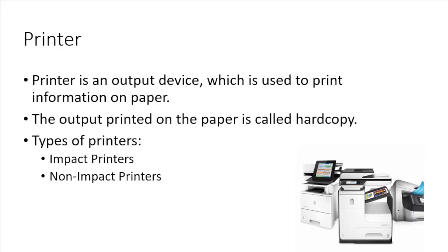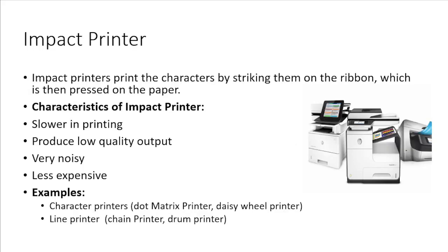Next is printer. A printer is the most commonly used output device and they are used to print documents on paper. The output printed on the paper is called hard copy. Printers are classified into two types: impact printer and non-impact printer. An impact printer produces output on paper by striking a print hammer or set of pins against an inked ribbon.